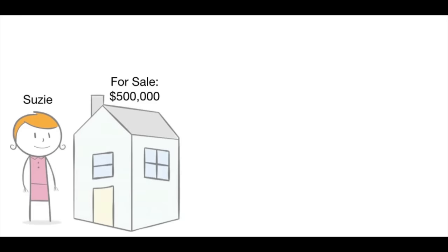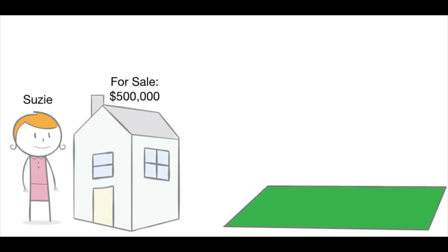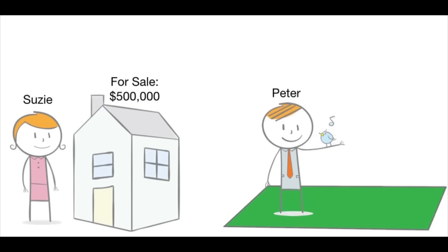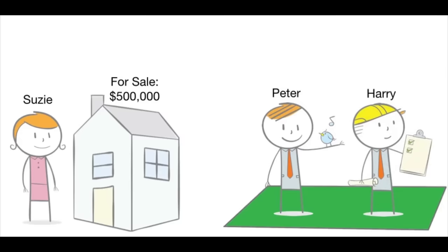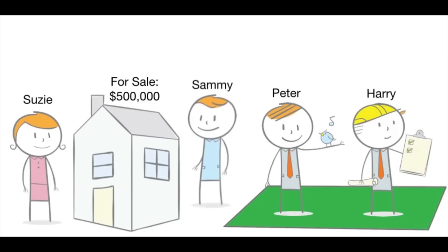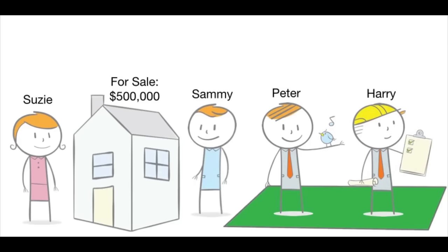Susie's selling her house for $500,000 in a neighborhood that has a nearby parcel of land also for sale. There are two parties interested in the land: Peter plans to develop the land into a beautiful park and bird sanctuary, and Harry plans to build a low-cost housing development. Sammy comes along and is interested in buying Susie's house for a cash deal, but he won't have the cash available for three months.